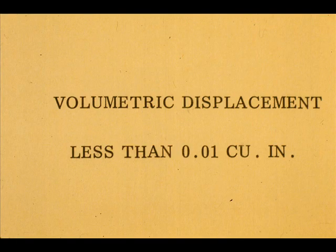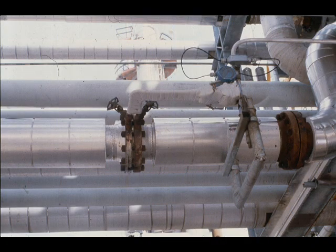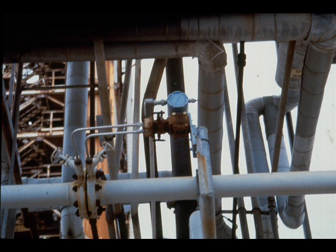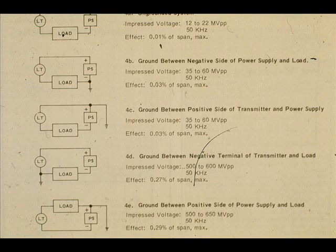The volumetric displacement of the sensor unit for maximum differential pressure change is less than 0.01 cubic inches; therefore, no reservoir pots are needed for any installation. Installation piping should comply with the same engineering standards used for other flow transmitters, and wiring is standard for two-wire DC signal systems. Consult local standards for grounding and shielding practices.